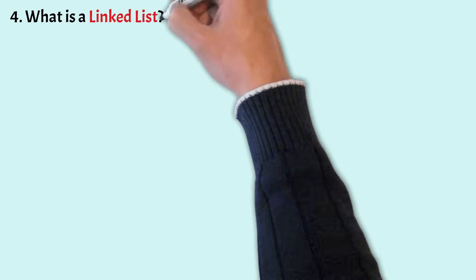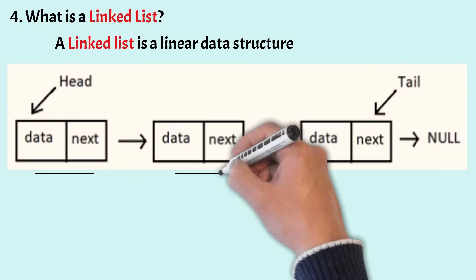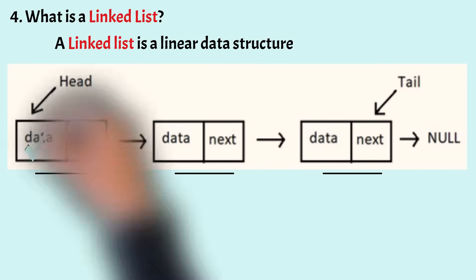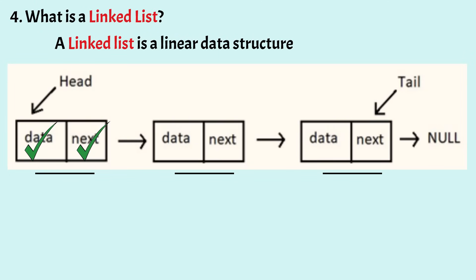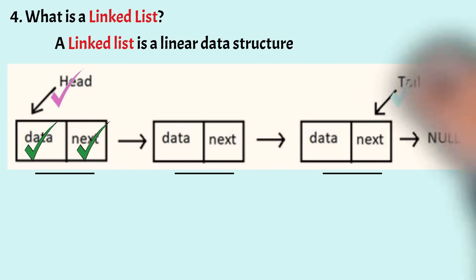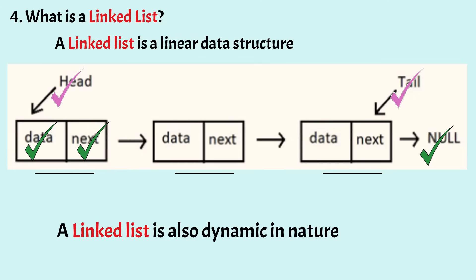What is a linked list? A linked list is a linear data structure consisting of a group of nodes where each node contains a data field to store data, and an address field to store the address of the next node, also known as a pointer. This forms a chain-like structure. The first node is referred to as the head, and the last node is referred to as the tail, which points to null. A linked list is dynamic in nature, meaning it doesn't have a fixed size and can shrink or grow according to requirements.